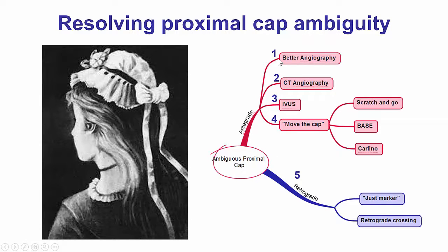However, we should not forget that there are antegrade options for many of those cases. Such options include: a better coronary angiogram; performing a pre-procedure CT angiogram to clarify the course of the vessel; doing IVUS to define the proximal cap, although in our case the patient did not have any large branch in the proximal cap to allow simultaneous visualization; and number four, by using the move-the-cap technique, which essentially creates a dissection plane proximal to the proximal cap and uses the dissection plane to advance the knuckle all the way through the occlusion past the distal cap. Thank you very much.